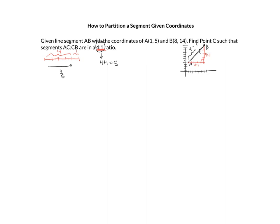I need to find out how much I changed in the X and how much I changed in the Y. In the X, we went from 1 all the way to 8, so that's a change in X of 7 — that's a distance of 7, from 8 minus 1. In the Y, we went from 5 to 14, so that's a change in Y of 9, from 14 minus 5.